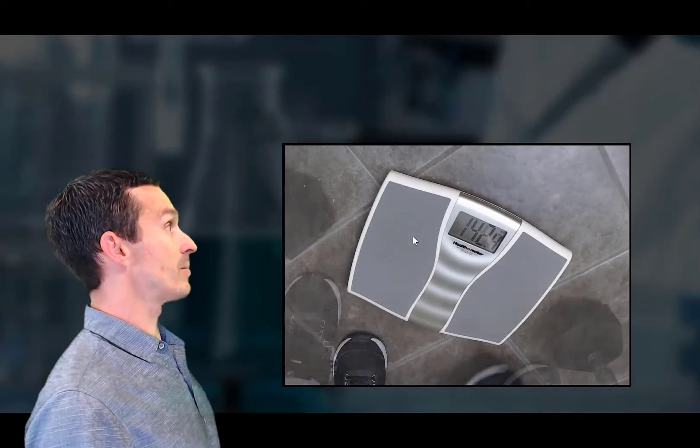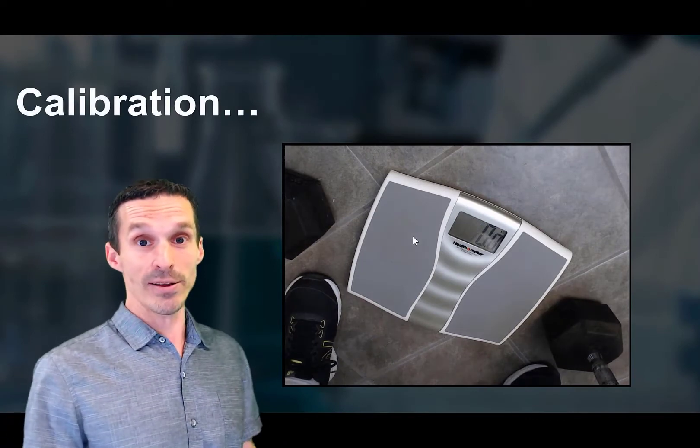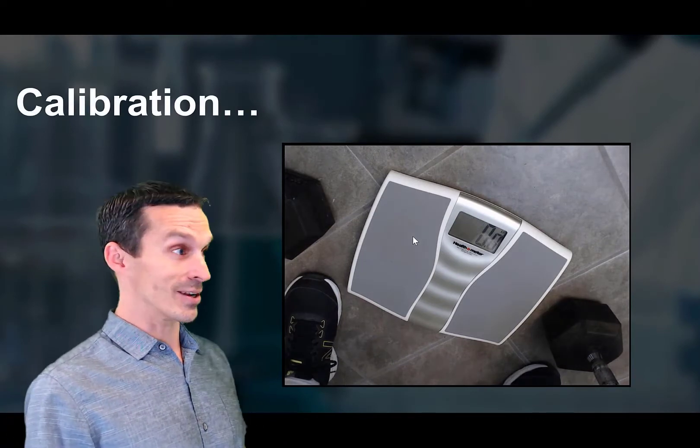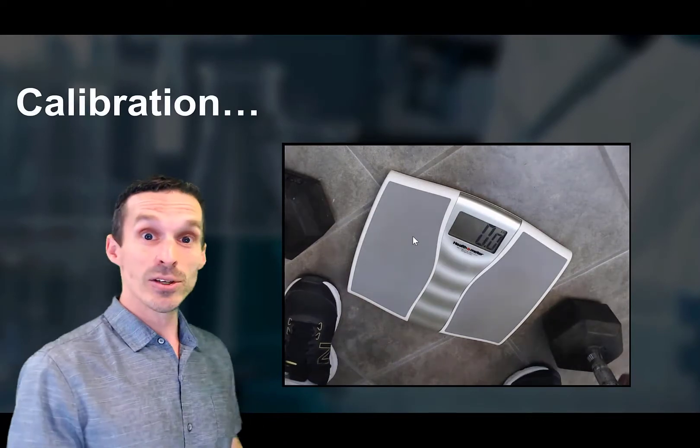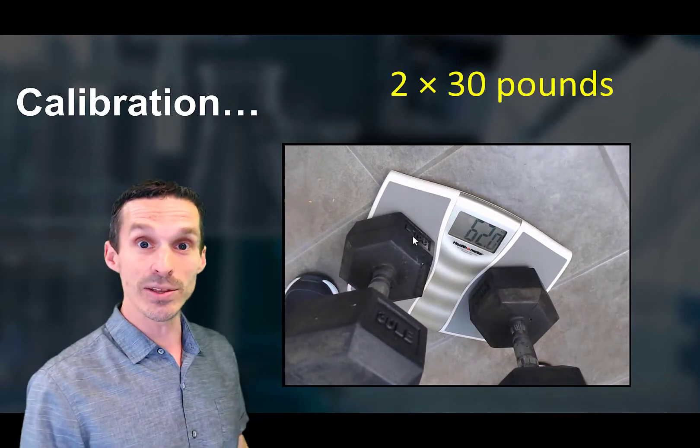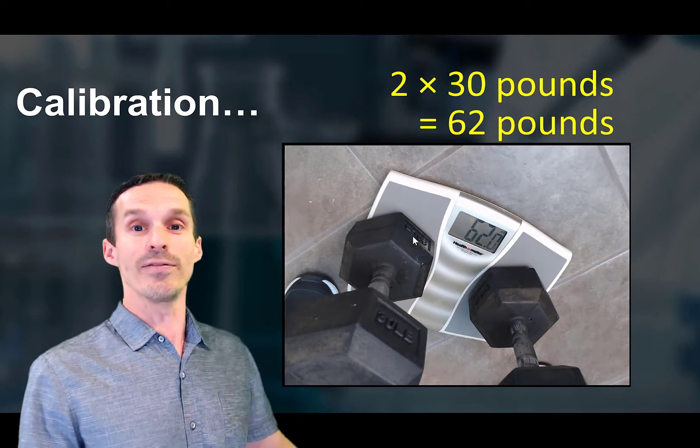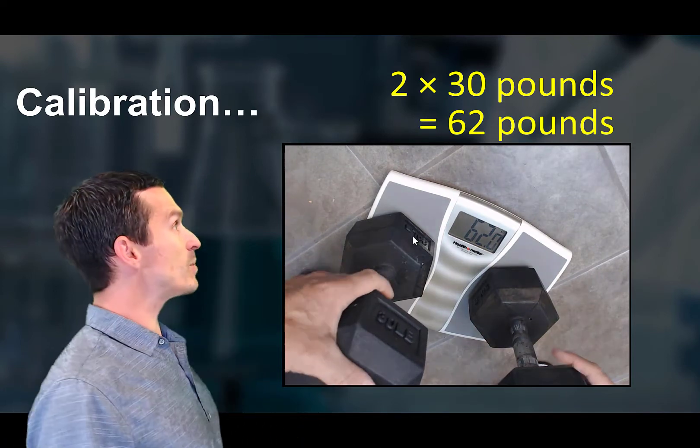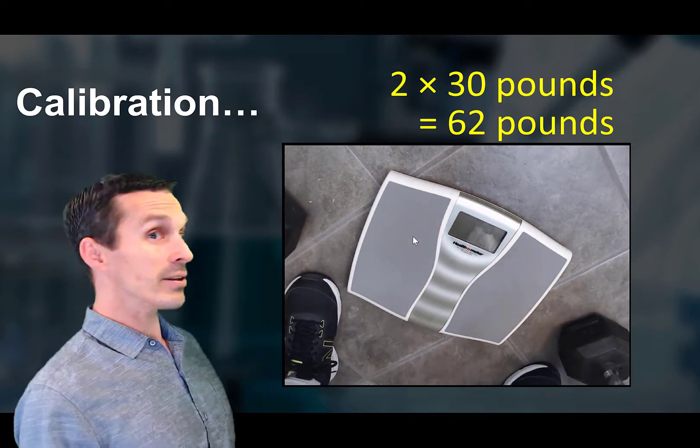I guess the question really comes down to how good is my bathroom scale? Is it accurate? Does it actually give me the correct mass? So I went through the trouble of, those are a couple of 30 pound weights, put them on the scale. And sure enough, they don't read correctly. They seem to be reading heavy by two pounds.